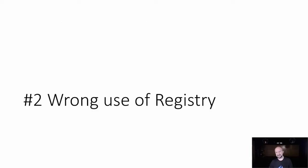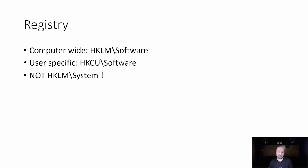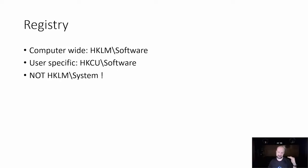Number two: wrong use of the registry. The registry has different locations for different kinds of data. Computer-wide settings go to HKEY_LOCAL_MACHINE\Software. User-specific settings go to HKEY_CURRENT_USER\Software. You do not put things in HKEY_LOCAL_MACHINE\System unless they are required for Windows to boot. The rule is: HKEY_LOCAL_MACHINE\Software for things not required to boot, and HKEY_LOCAL_MACHINE\System for things that are required for your computer to boot.